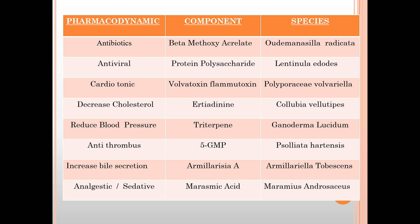Here is a list of fungi used in medicine, with their pharmacodynamic component and species. This includes: antibiotic beta-methoxyl-acrylate from Oudemansiella radicata; antiviral protein polysaccharide from Lentinula edodes; cardiotonic olivetoxin and flammutoxin from Polyporus olivaceus; decreased cholesterol compounds from Cortinellus and Pleurotus ostreatus; reduced blood pressure via triterpenoids from Ganoderma lucidum; antithrombotic 5-GMP from Lentinus edodes and Hericium; increased bile secretion from Armillaria species; and analgesic and sedative marasmic acid from Marasmius and Rosaceous species.